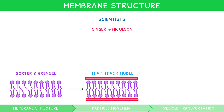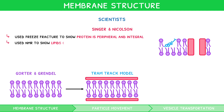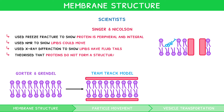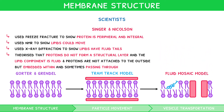Finally, Singer and Nicholson used three key developments to complete our understanding. They first used freeze-fracture electron micrographs to show the inside of the lipid bilayer had indents, and thus protein was found peripherally and integrally. Then they used NMR to show that the lipids could move and so could not be held in place. They finally used X-ray diffraction to show that lipids gave patterns similar to liquid paraffin, showing they must have fluid tails. Putting this all together, they theorised that proteins do not form a structural layer, the lipid component is fluid, proteins are not attached to the outside but embedded within and sometimes passing through. This gave rise to the fluid mosaic model that we know today.